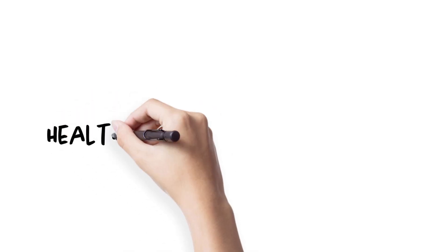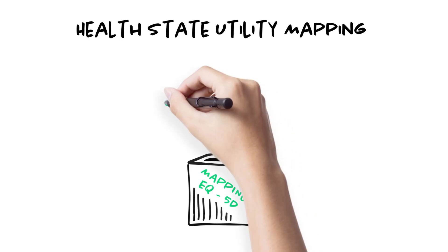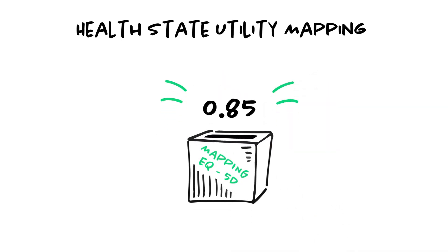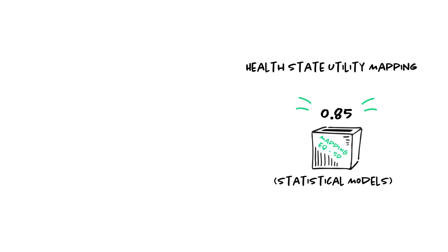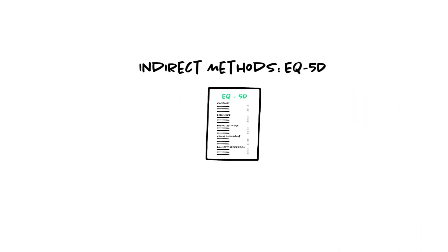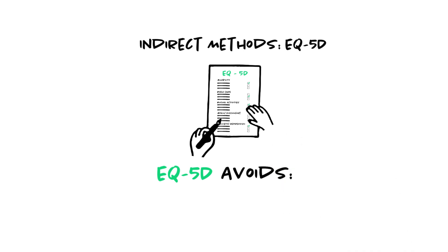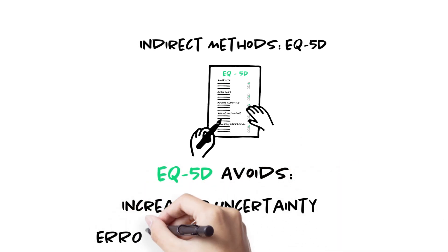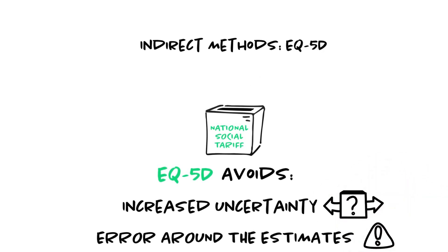In addition to direct and indirect methods, another one is available: mapping. Several mapping functions have been developed to predict EQ5D utilities as a function of scores on other quality of life instruments. It's useful when quality of life data are collected in a clinical trial using a disease-specific instrument for which no tariff exists. The development of these mapping functions uses statistical models fitted to data from patients who completed simultaneously the disease-specific instrument of interest and EQ5D. However, in most cases it is still preferable to obtain utilities directly from EQ5D or another instrument with a widely recognized utility tariff, to avoid increased uncertainty and error around the estimates.